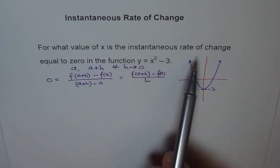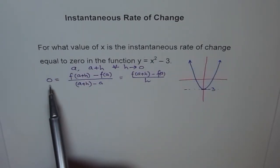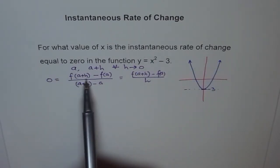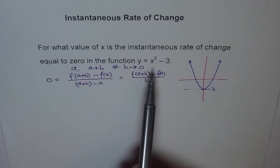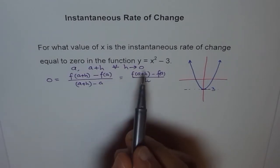And that's how we'll get a simplified expression from where we can find the value of A. Now, since they want instantaneous rate of change equal to 0, we'll put 0 here. And that's the instantaneous rate of change. Change in Y value divided by change in X value of the function.